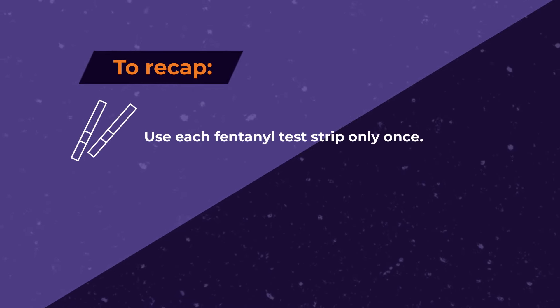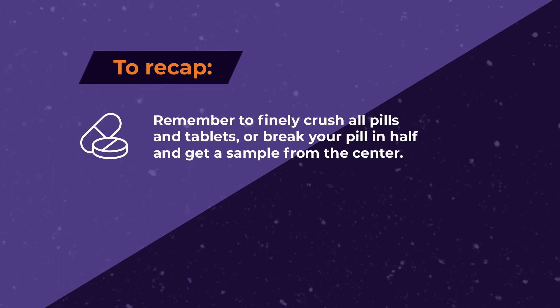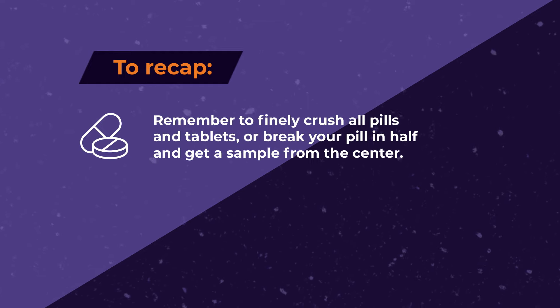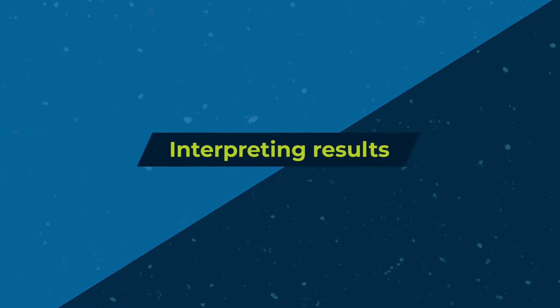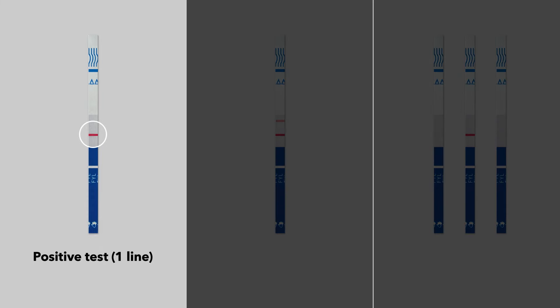To recap: use each fentanyl test strip only once. Remember to finely crush all pills and tablets, or break your pill in half and get a sample from the center. Interpreting results: a positive test means that fentanyl or a fentanyl analog that the strip is capable of detecting has been detected, although we don't know exactly which kind of fentanyl or how much there is.